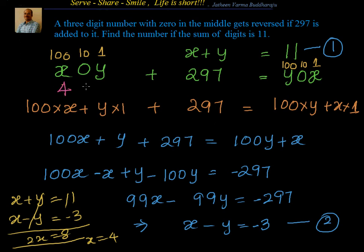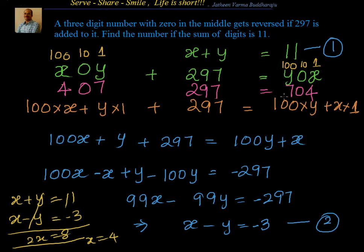If x equals 4, and x plus y is 11, then y equals 11 minus 4, which is 7. So the number is 407. Checking: 407 plus 297 equals 704. Not only that, 4 plus 7 is 11, so both conditions are satisfied.